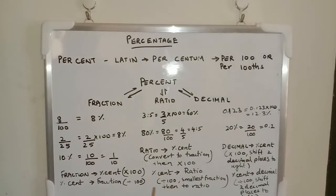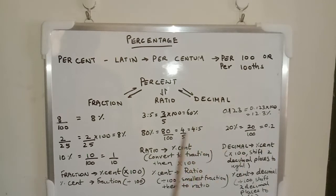Next, percent to ratio. You have to make that percent into the smallest fraction by dividing the percent by 100. Make it into simplest fraction, then convert to ratio.